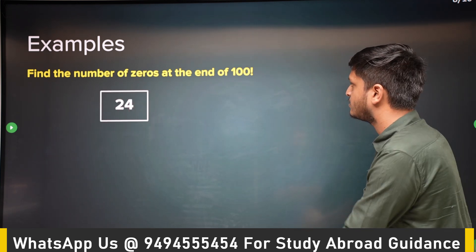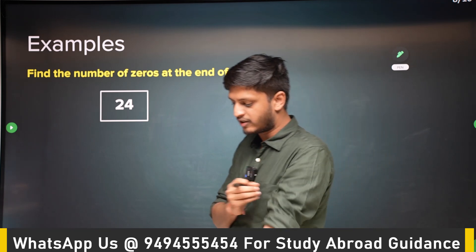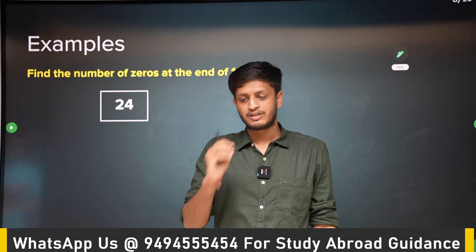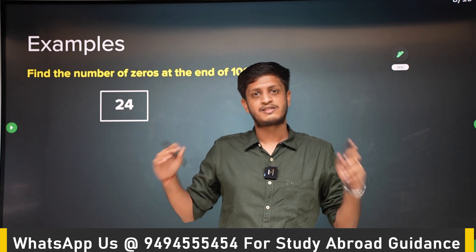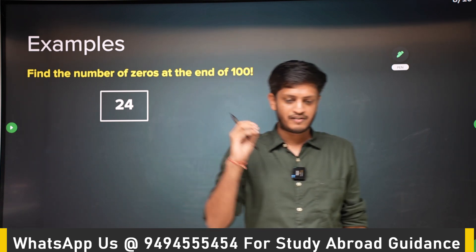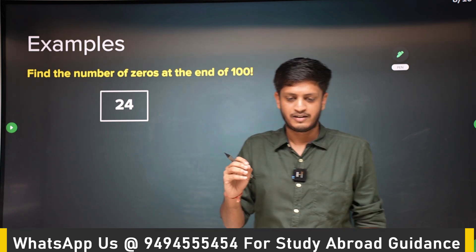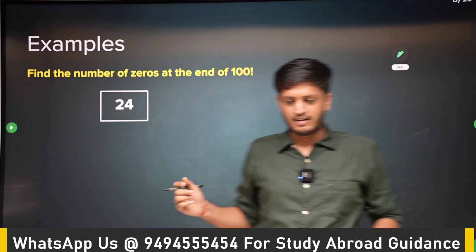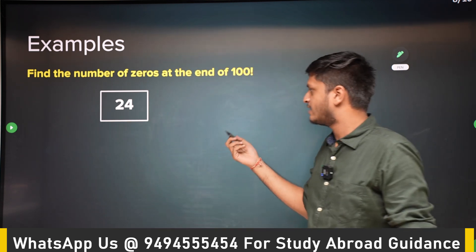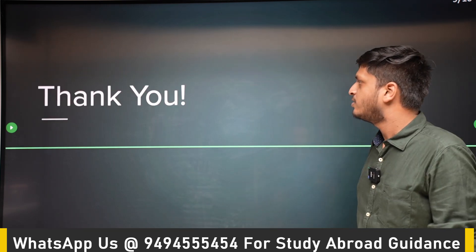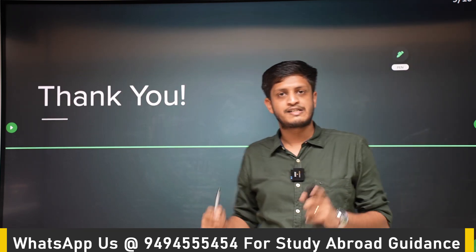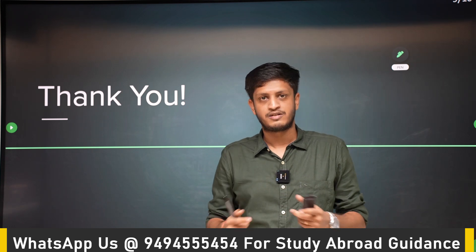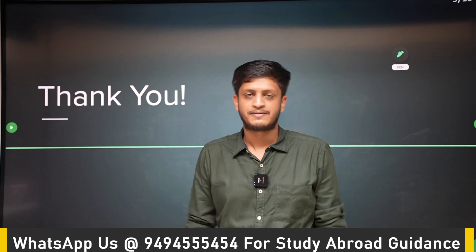You can apply this method to any n!. Doing this problem without breaking it down systematically would be impossible — you just have to think clearly about how zeros are formed at the end. Thanks a lot, this covers factorials. In the next lecture we will learn permutations.